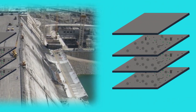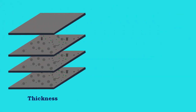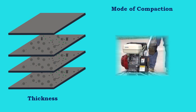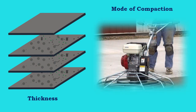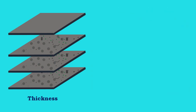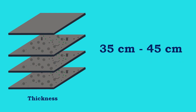The thickness of each layer depends on the mode of compaction employed. However, a thickness of about 35 to 45 cm is commonly used.